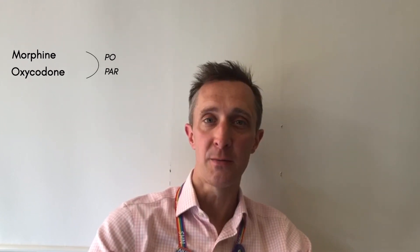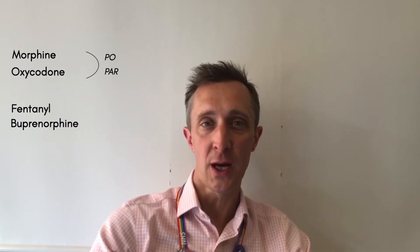We're going to concentrate on talking about strong opioids — I'm not going to talk about codeine or tramadol at this point. The strong opioids you will most commonly come across are morphine and oxycodone, which come as oral or parenteral preparations, and fentanyl and buprenorphine, which come generally speaking in patches. It's important that you look up the different ways of prescribing these drugs, or refer to the BNF or your local palliative care guidelines.